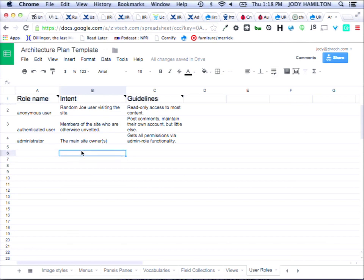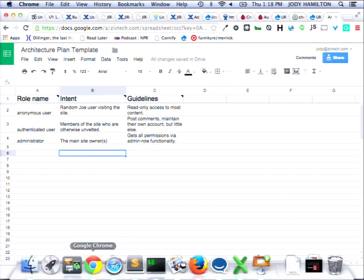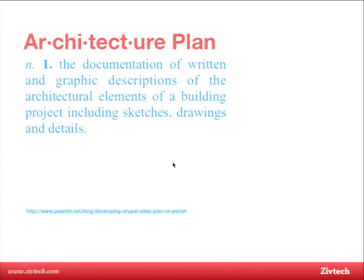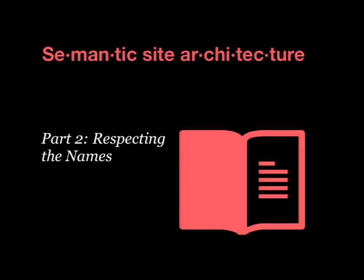The second part is thinking about the names that already exist in Drupal. Thinking about the way things are named and what those meanings are helps you slow down when making architectural decisions, give more thought to what's going to be obvious and intuitive, and find the simplest way to architect something. Architecting something is about making it so simple that nobody has to ask questions about it later.